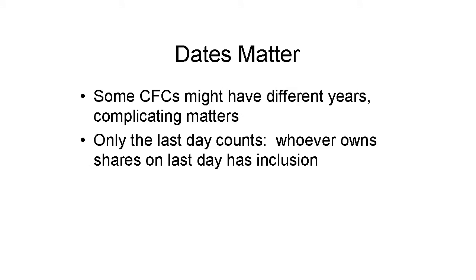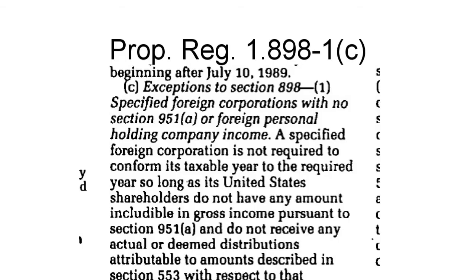All of this 951 Cap A stuff happens for a particular U.S. shareholder for all of the CFCs she owns whose tax years end with or within her tax year. Tax year for a CFC means the year required under Section 898. Under very old proposed regulations, this can be any year until the CFC generates a subpart F inclusion. Thereafter, it must be the majority U.S. shareholder's year.